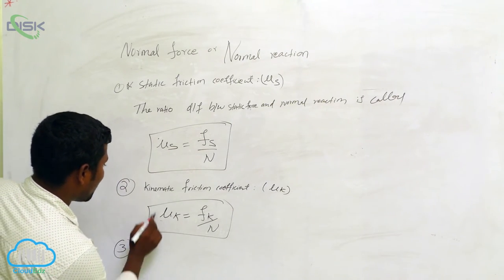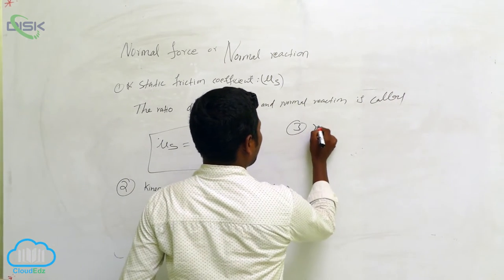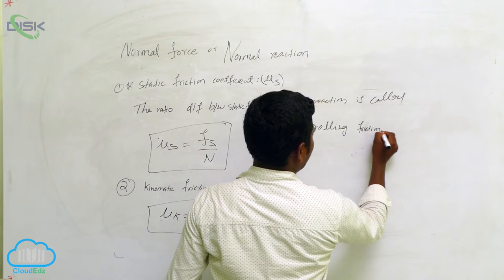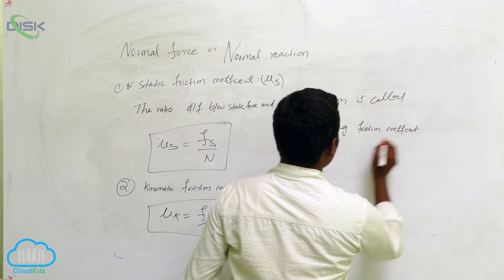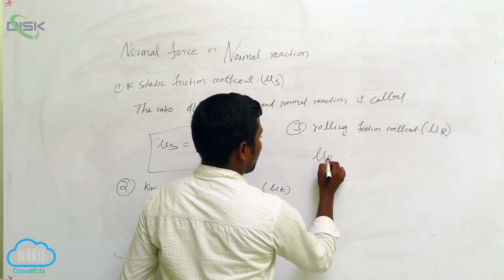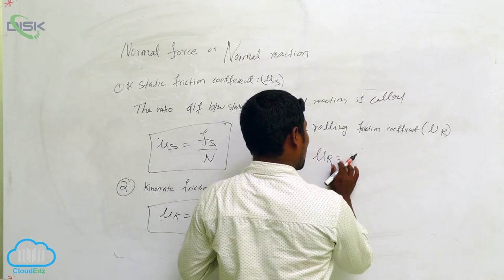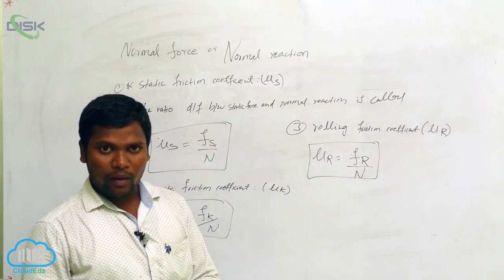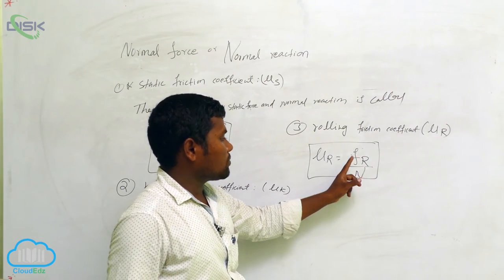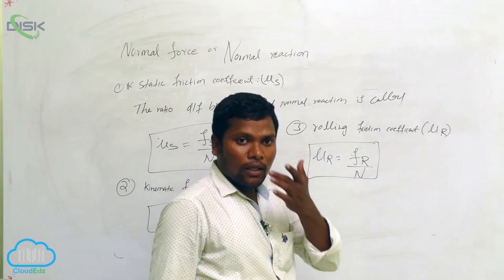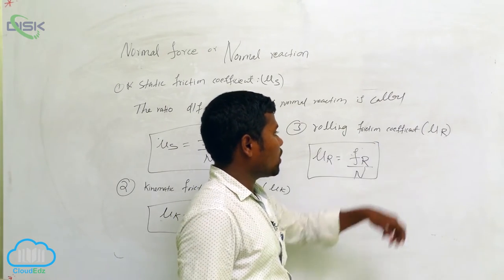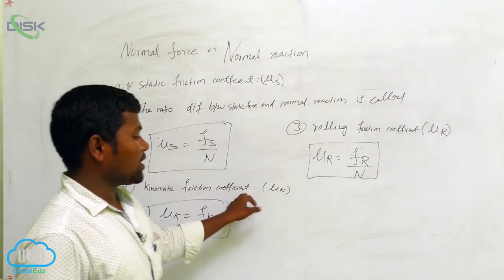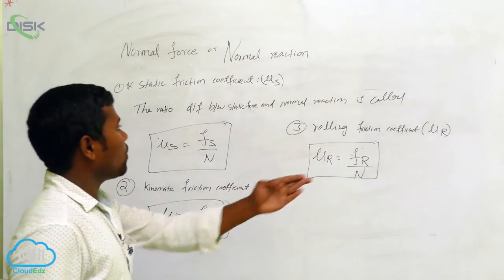Third one — rolling friction coefficient. Which letter do we use? μr. The formula is μr = Fr/N. The ratio of rolling force to normal force or normal reaction is called the rolling friction coefficient, denoted by μr. So: first is static friction coefficient μs, second is kinetic friction coefficient μk, and third is rolling friction coefficient μr.